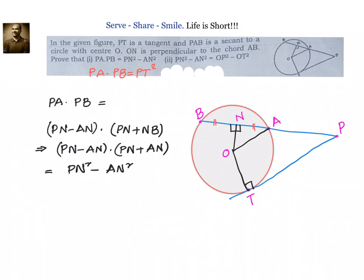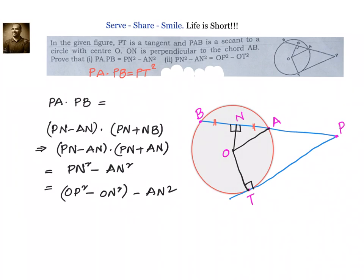For the second step, we have to prove PN square minus AN square equals OP square minus OT square. In triangle OPN, OP square equals ON square plus PN square, so PN square equals OP square minus ON square. Therefore PN square minus AN square equals OP square minus ON square minus AN square, which equals OP square minus (ON square plus AN square).